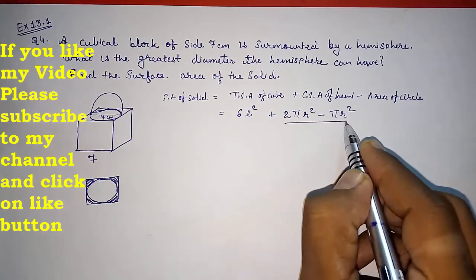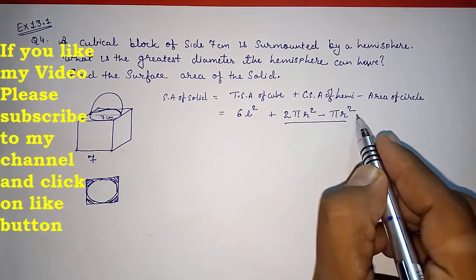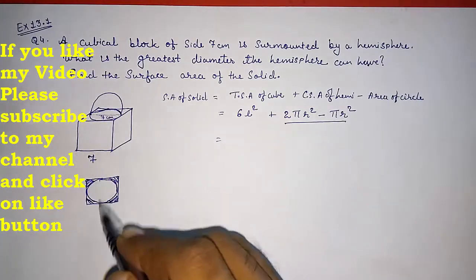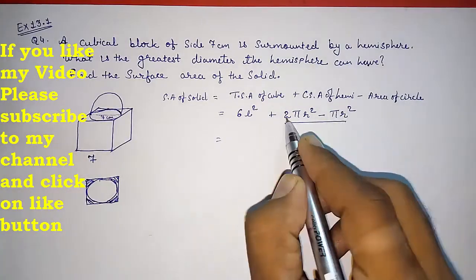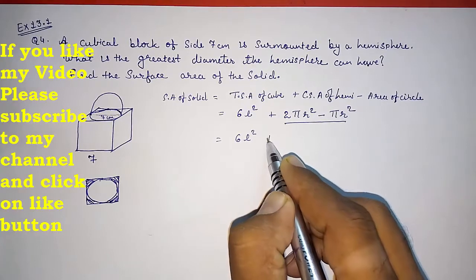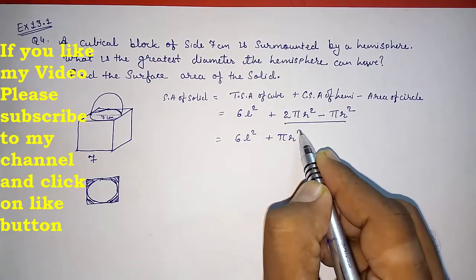Now we know these two are like terms: 2πR² minus πR². So don't directly put out the values. First we have to solve this also. That will be 6L² plus πR².